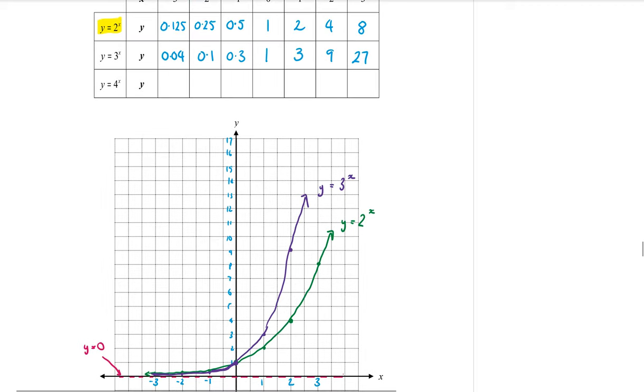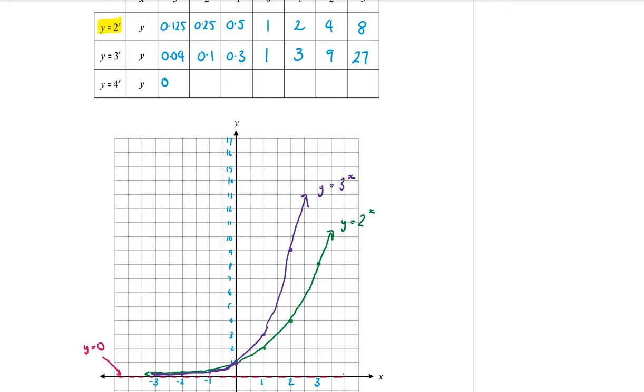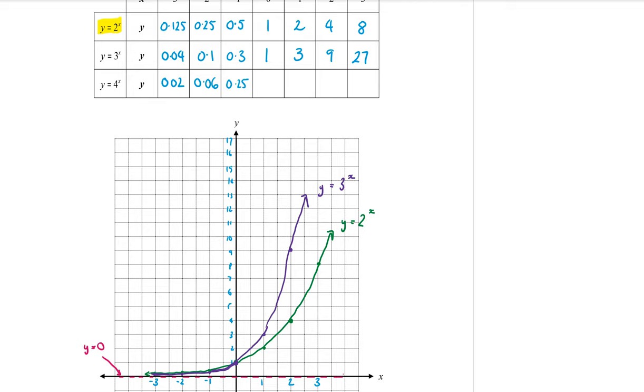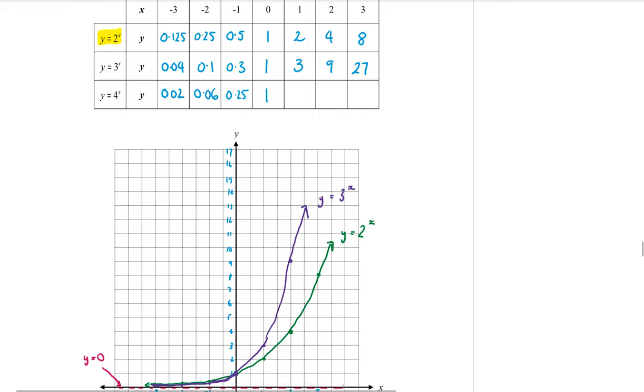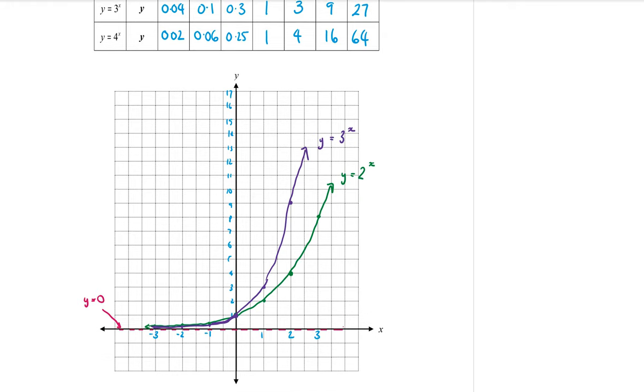And then there's one more graph here, which is 4 to the power of x. So 4 to the power of negative 3 is 0.02. 4 to the power of negative 2 is 0.06. 4 to the power of negative 1 is 0.25. 4 to the power of 0 is 1. 4 to the power of 1 is 4. 4 to the power of 2 is 16. And 4 to the power of 3 is 64. So let's draw that in another color, a yellowy color.